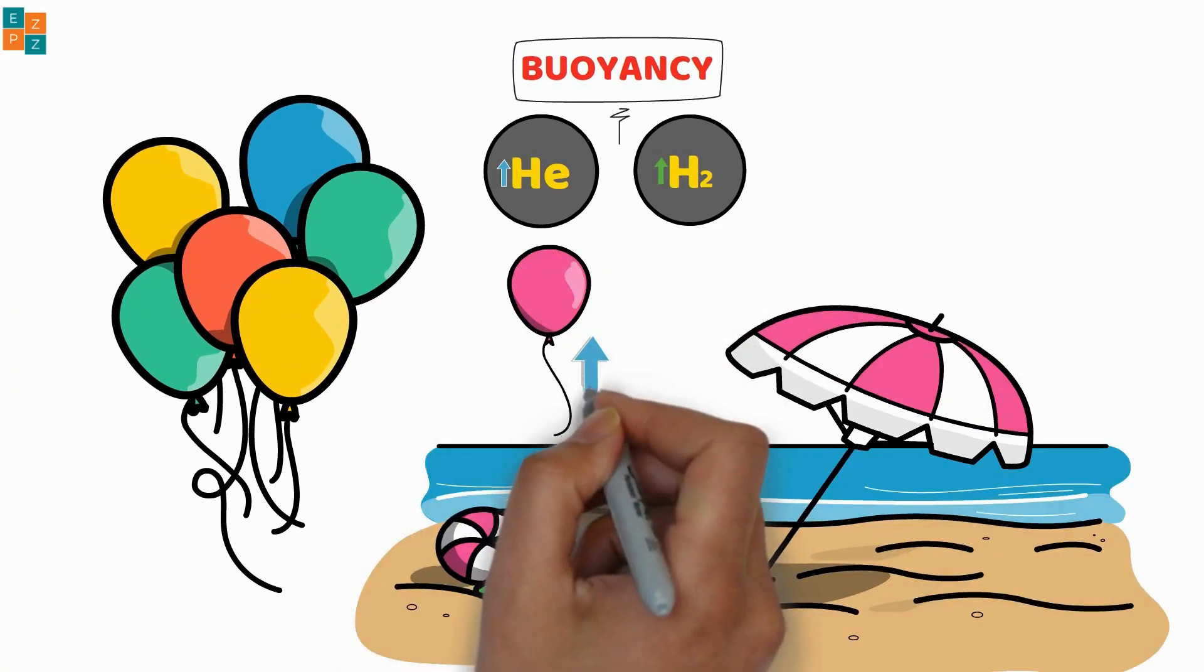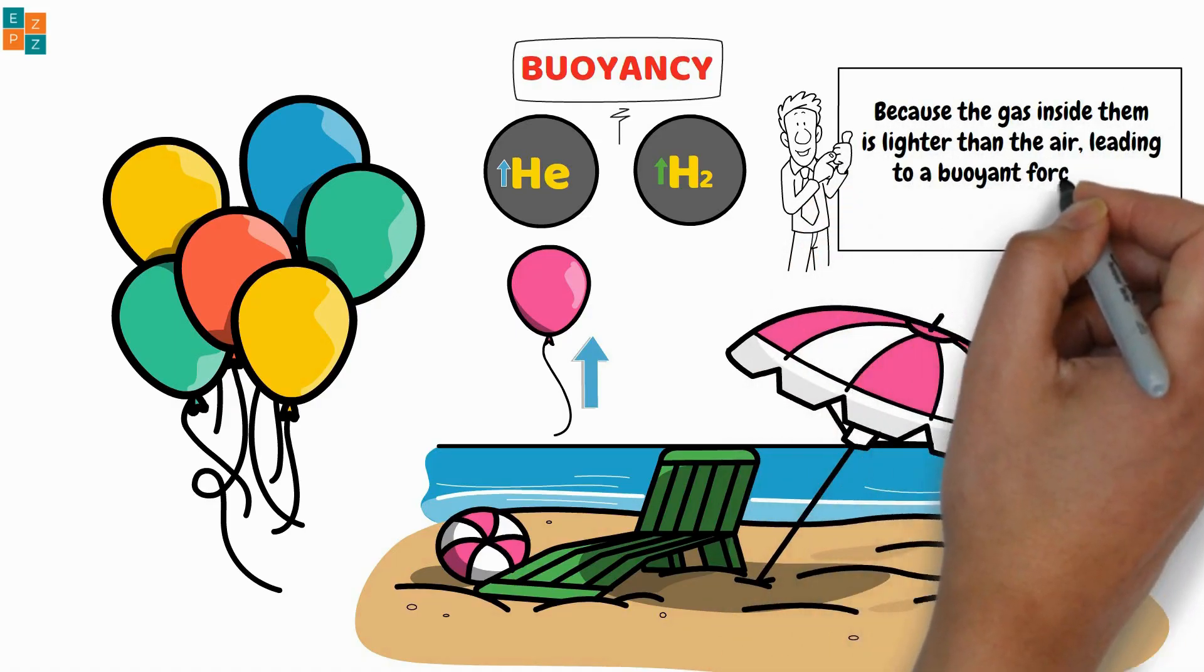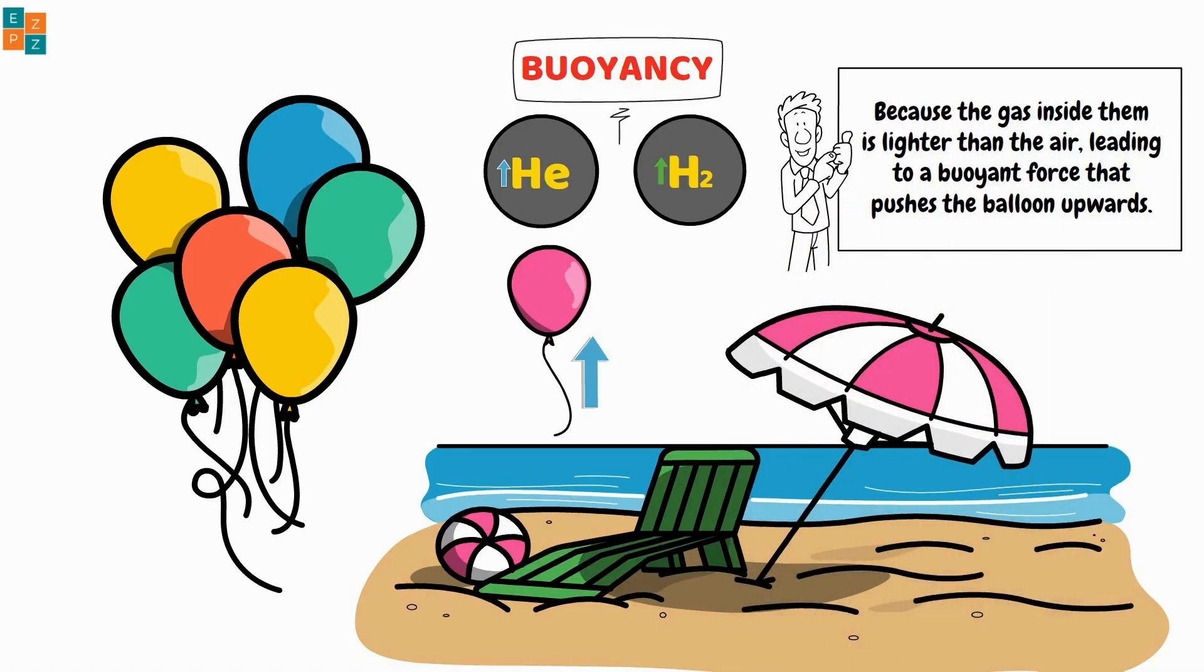In summary, balloons float because the gas inside them is lighter than the air, leading to a buoyant force that pushes the balloon upwards.